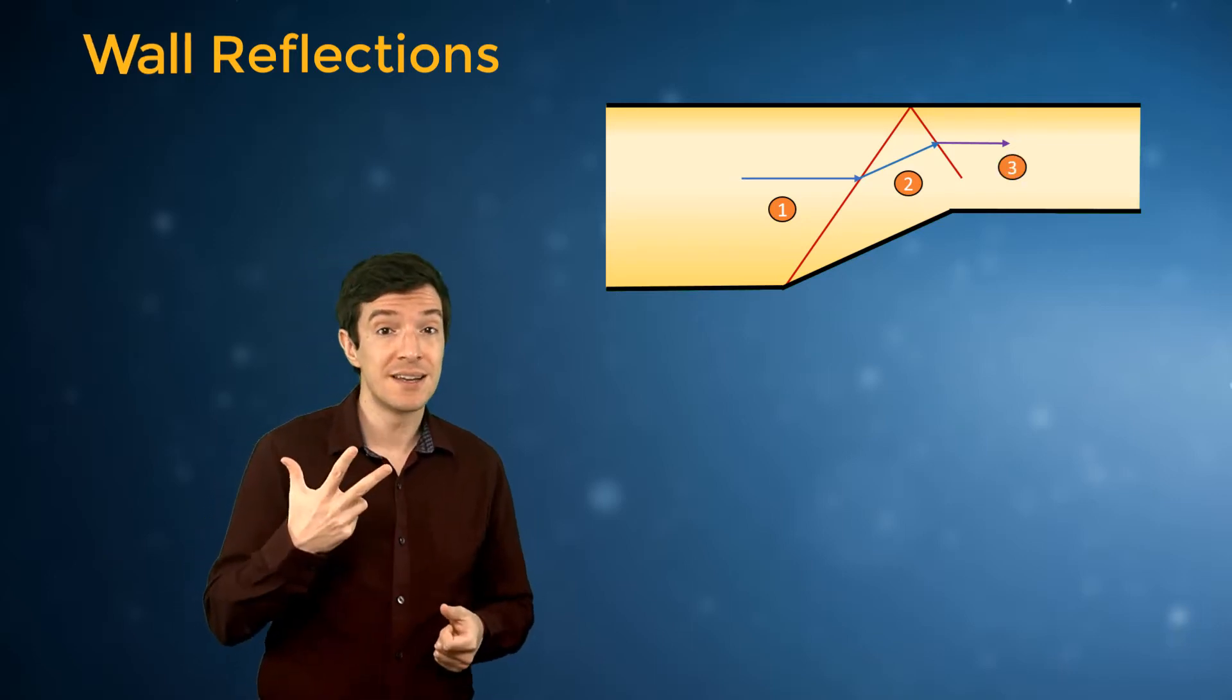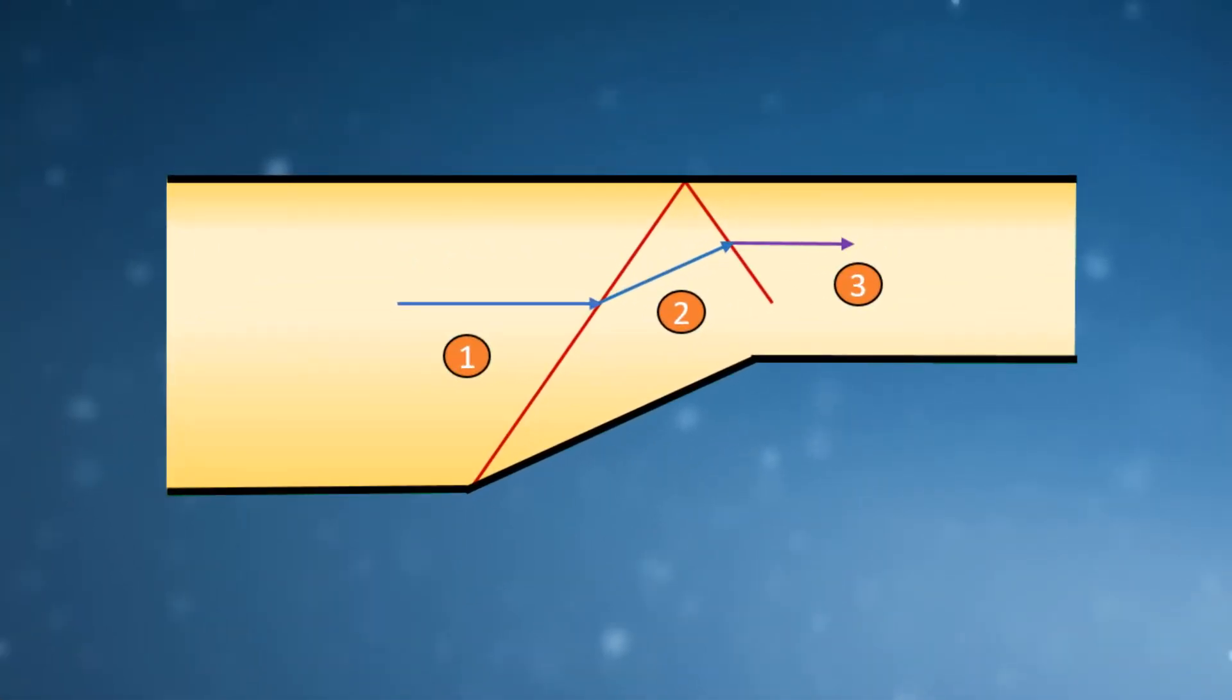The deflection corner theta 1 generates the shock wave A that has an angle beta 1-2. The flow changes direction and approaches the upper wall still at supersonic speed.